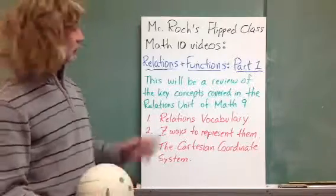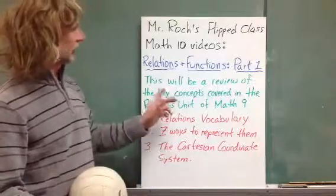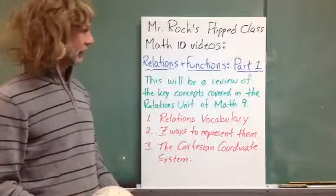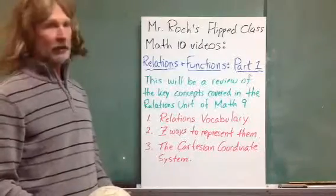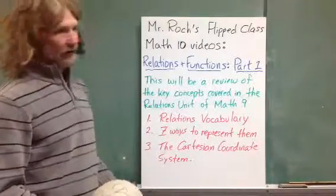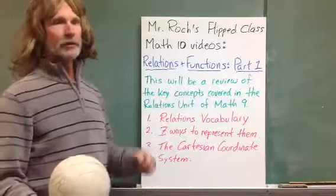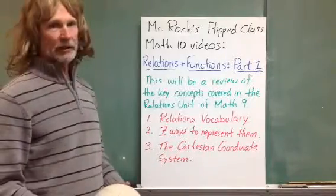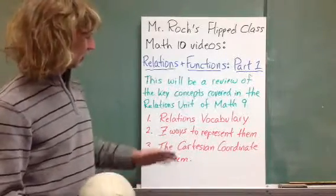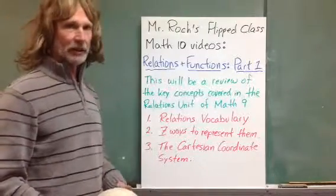This particular unit will be on Relations and Functions, and Part 1 and 2 will be reviewing the key concepts covered in Math 9. In this Part 1, we'll be talking about some of our relations vocabulary, including things like independent and dependent variables, discrete versus continuous graphs, and so on. We'll also be talking about the seven different ways to represent relations, and talking about the Cartesian coordinate system, and doing one example that will kind of summarize some of that stuff up.